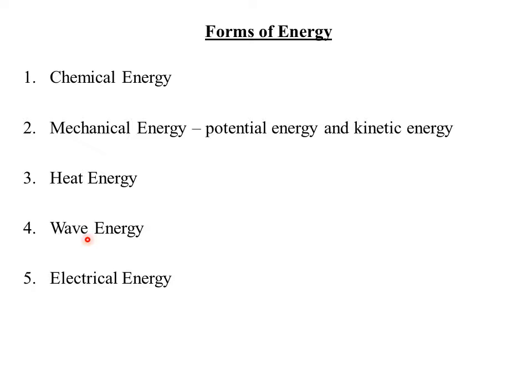The fifth and last form of energy is electrical energy, which refers to a form of energy usually obtained through the conversion of other forms of energy using generators. For example, the kinetic energy of water in waterfalls is converted to electrical energy in hydroelectric power stations. In geothermal stations, the kinetic energy of steam is converted to electrical energy. In electric cells and batteries, chemical energy is converted to electrical energy.